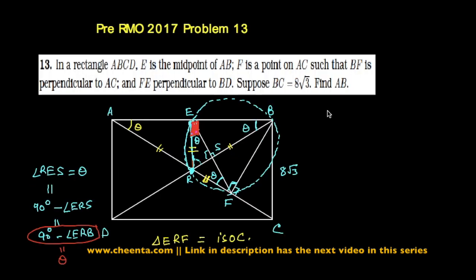So we found ER equal to RF. Now we also found that these two angles must be equal—that is, angle ERS must be equal to angle FRS, because the triangles would be congruent. Triangle ERS would be congruent to triangle FRS.